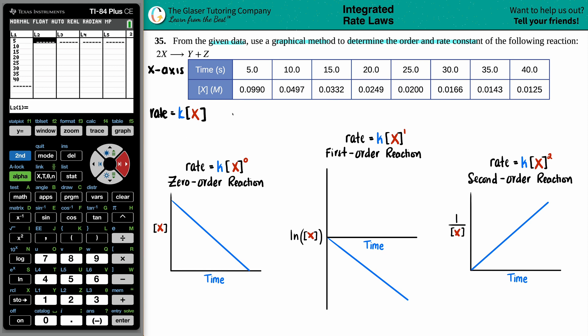Now we're going to plug in L2s, which is the concentration. Maybe I'll just say down here that the time is L1 and the concentration is L2. L just means list. So let's go back up and let's do this. So 0.099 enter. 0.0497 enter. 0.0332 enter. 0.0249 enter. 0.0200 enter. 0.0166 enter. 0.0143 enter. And then the last one 0.0125 enter.